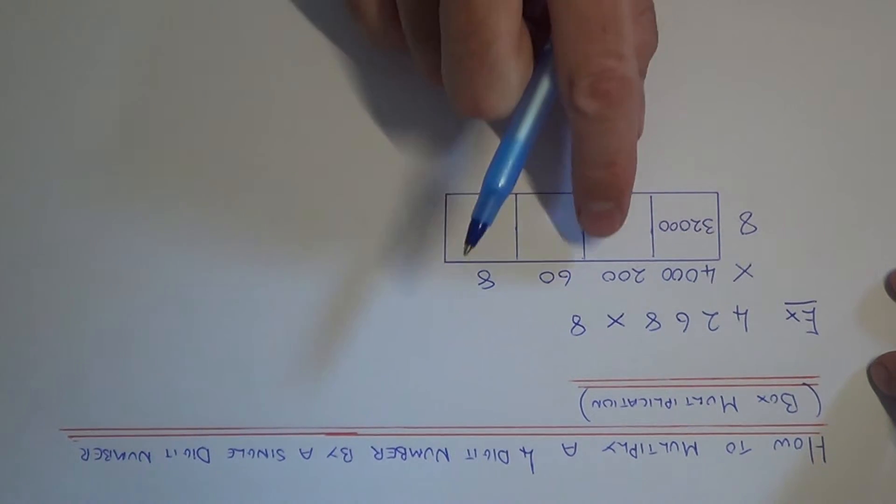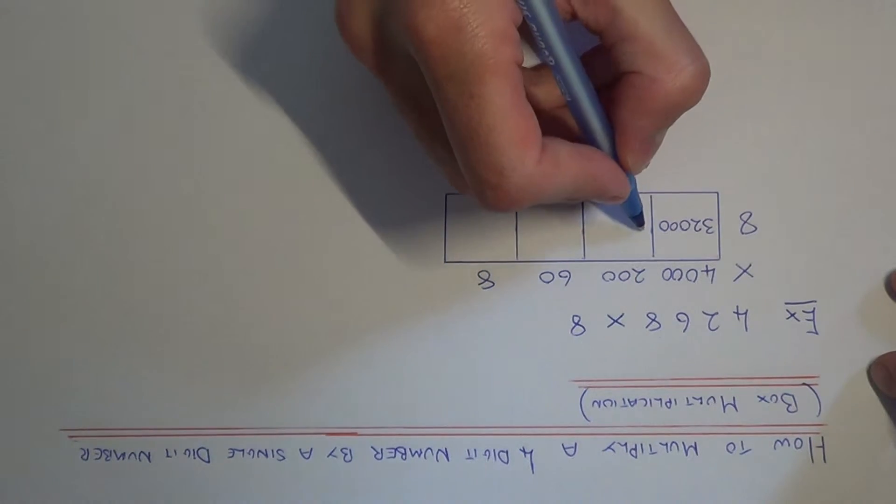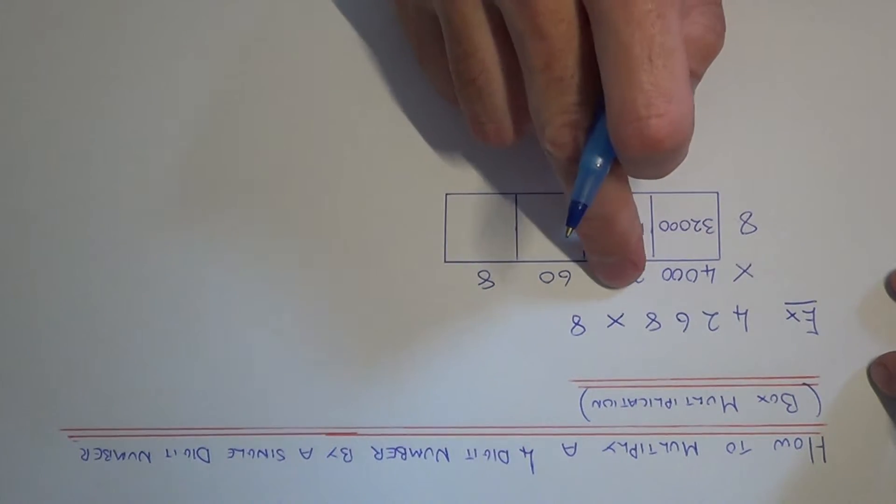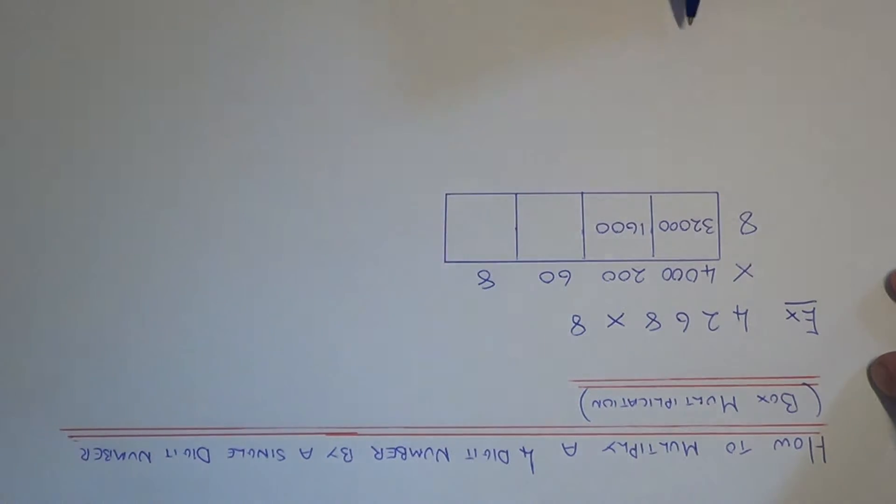And then we just add the three zeros back on at the end. So for the next box we do 2 times 8, which is 16. Since I've covered up two zeros, I add two zeros on.